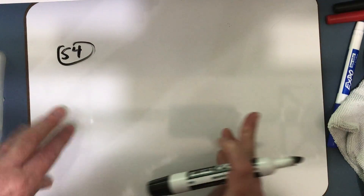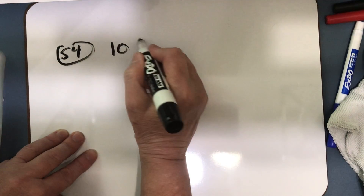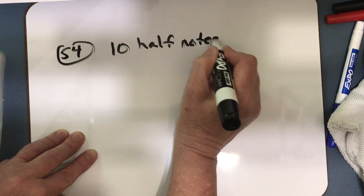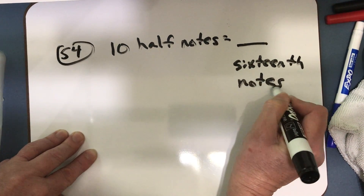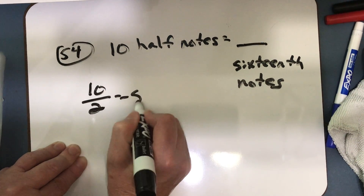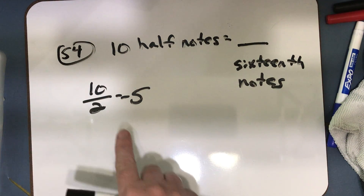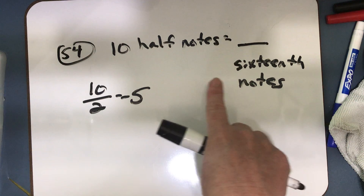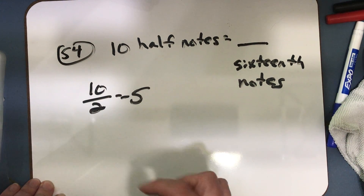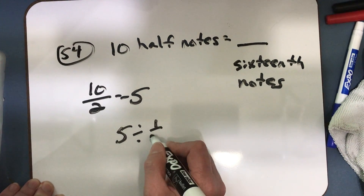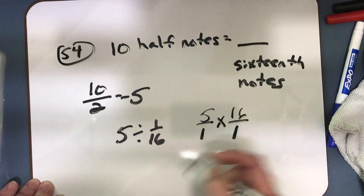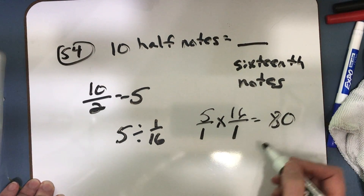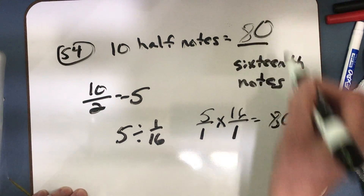Now let's look at number 54. Number 54 says 10 half notes equals how many sixteenth notes? Well, 10 halves would equal 5 whole notes, because there are 10 half notes in 5 wholes. Then if I want to know how many sixteenth notes there are, I've changed 10 half notes to 5 wholes. So 5 divided by 1/16 — how many sixteenth notes are there? I solve that by doing 5/1 times 16/1, the reciprocal of the divisor, and that equals 80. So there are 80 sixteenth notes in 10 half notes.